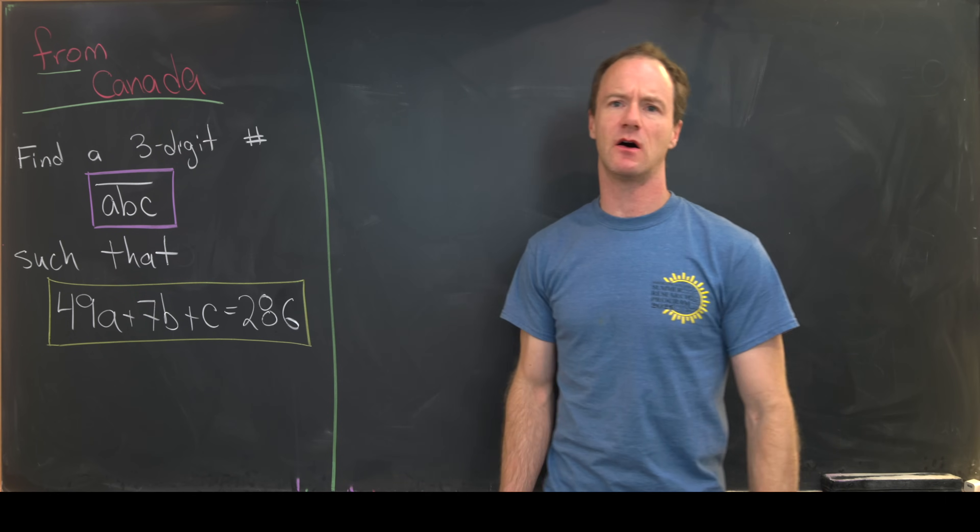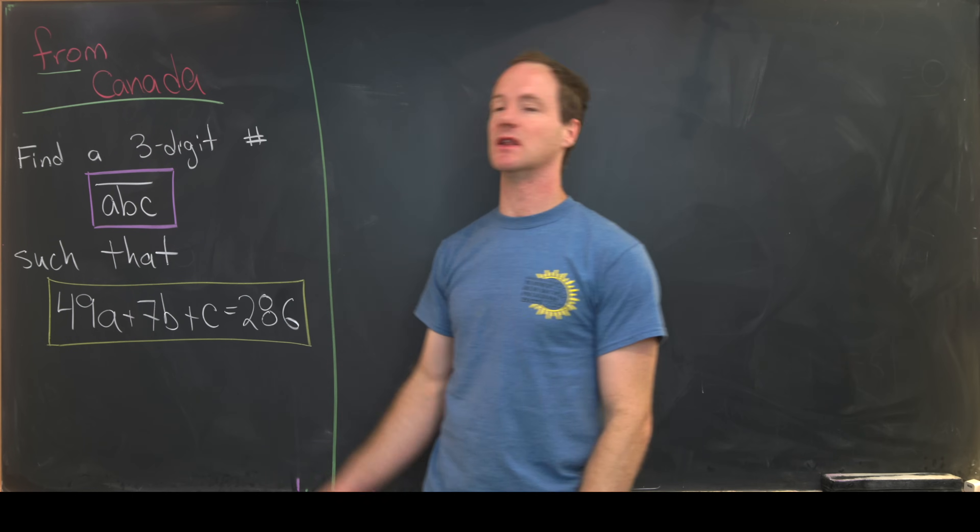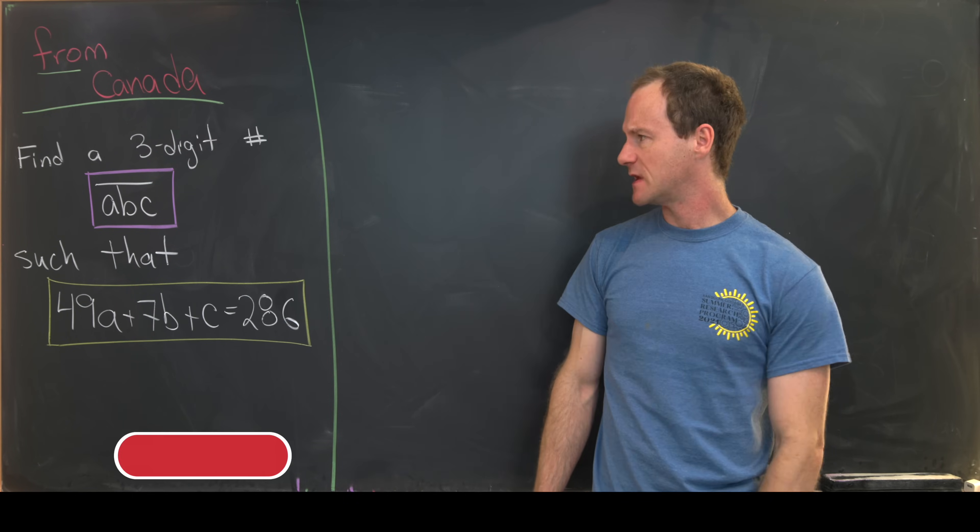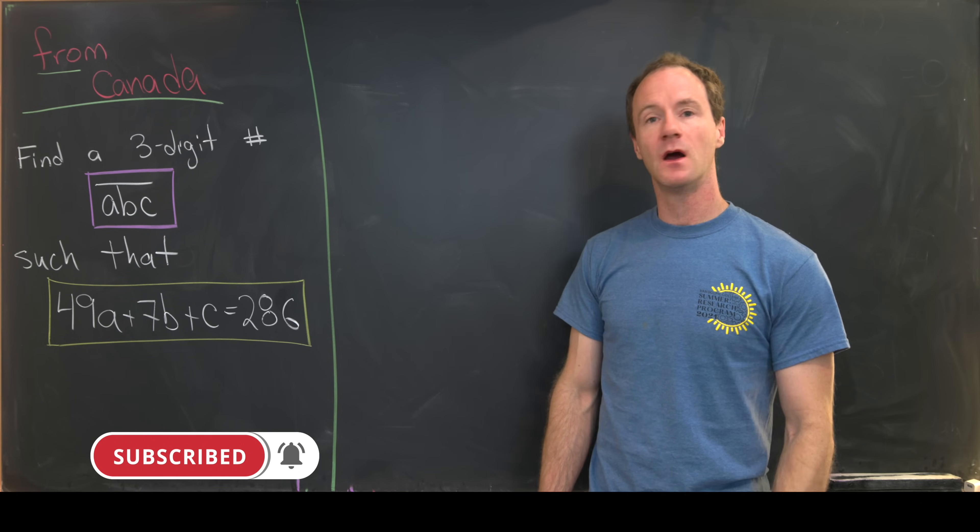And so generally when we talk about n-digit numbers, we write the digits like A, B, C and put a line over it. So that means that A, B, and C can only really be between 0 and 9.